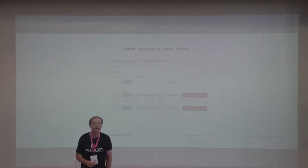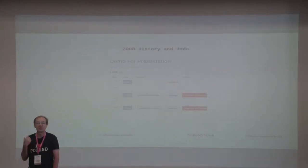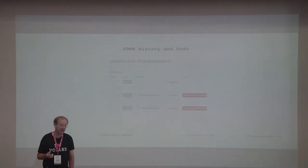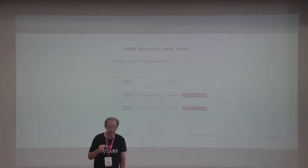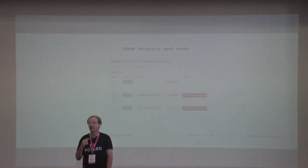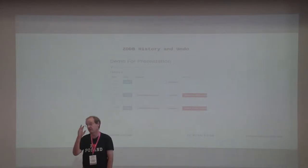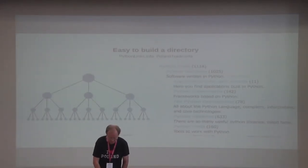ZeoDB keeps versions of objects. All the different tools that use it have a way of looking at versions. The nicest one is from Plone — they have a really nice interface. You can look at previous versions, compare different versions, and restore versions. It has a history mechanism, which is very nice, particularly if you're doing any kind of through-the-web editing. When you make a mistake, you can go back to what it was.